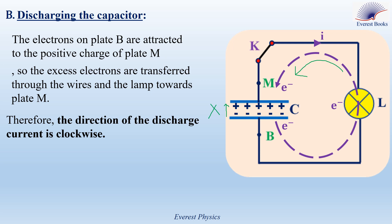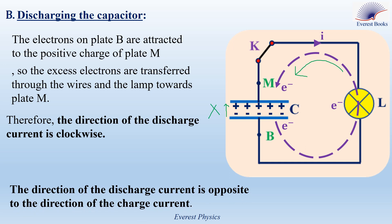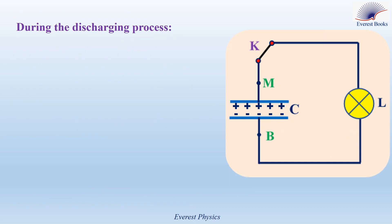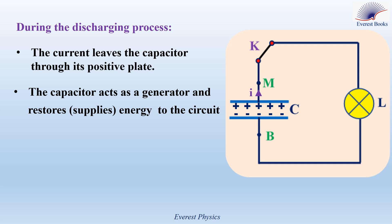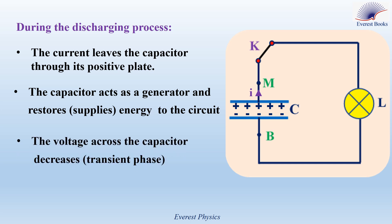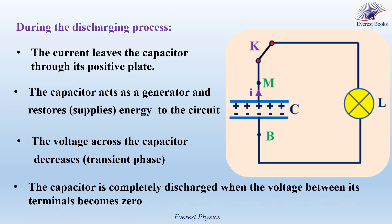Comparing the discharge current to the charge current: in the charge circuit, the current flows into the positive plate of the capacitor. But in the discharge circuit, the discharge current flows out from the positive plate. So the direction of the discharge current is opposite to the direction of the charge current. We conclude that during the discharging process, the current leaves the capacitor through its positive plate. The capacitor acts as a generator and restores or supplies energy to the circuit. The voltage across the capacitor decreases during the transient phase, and the capacitor is completely discharged when the voltage between its terminals becomes zero.